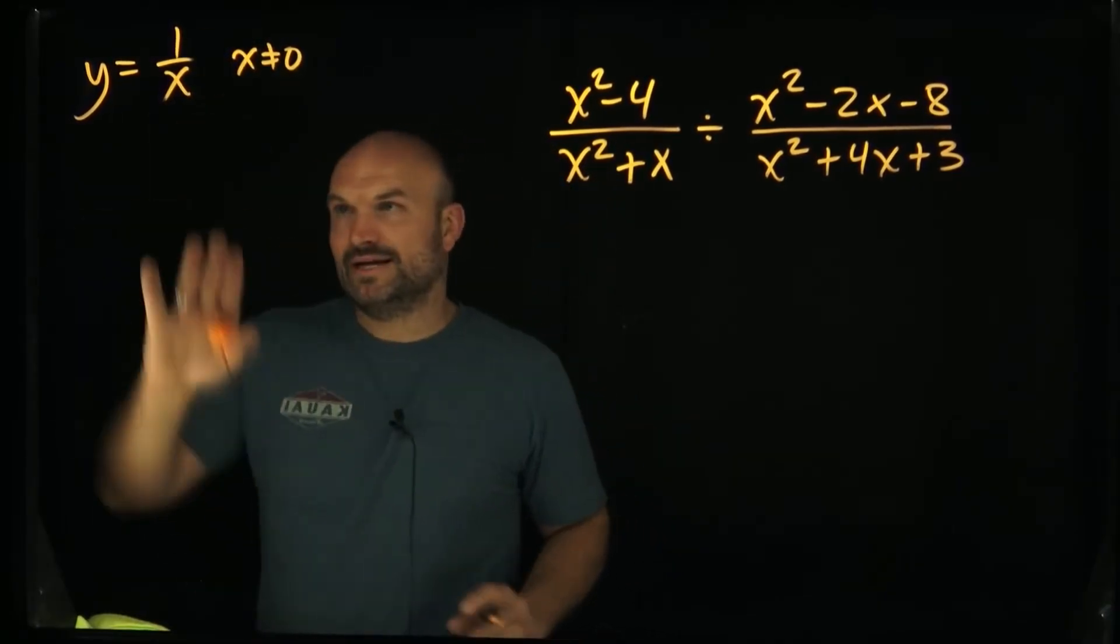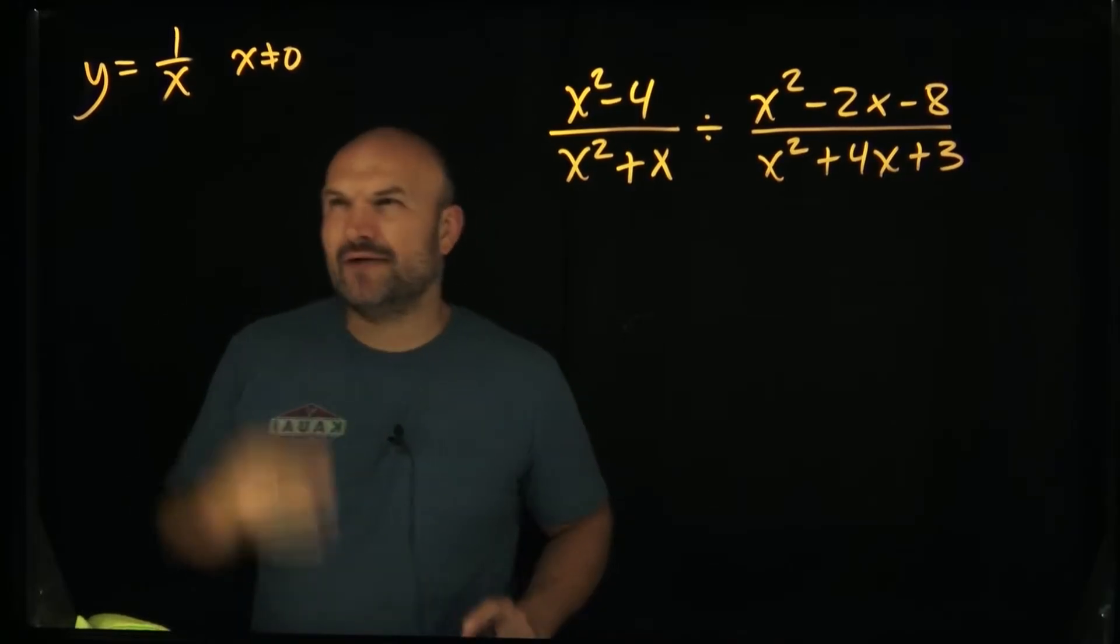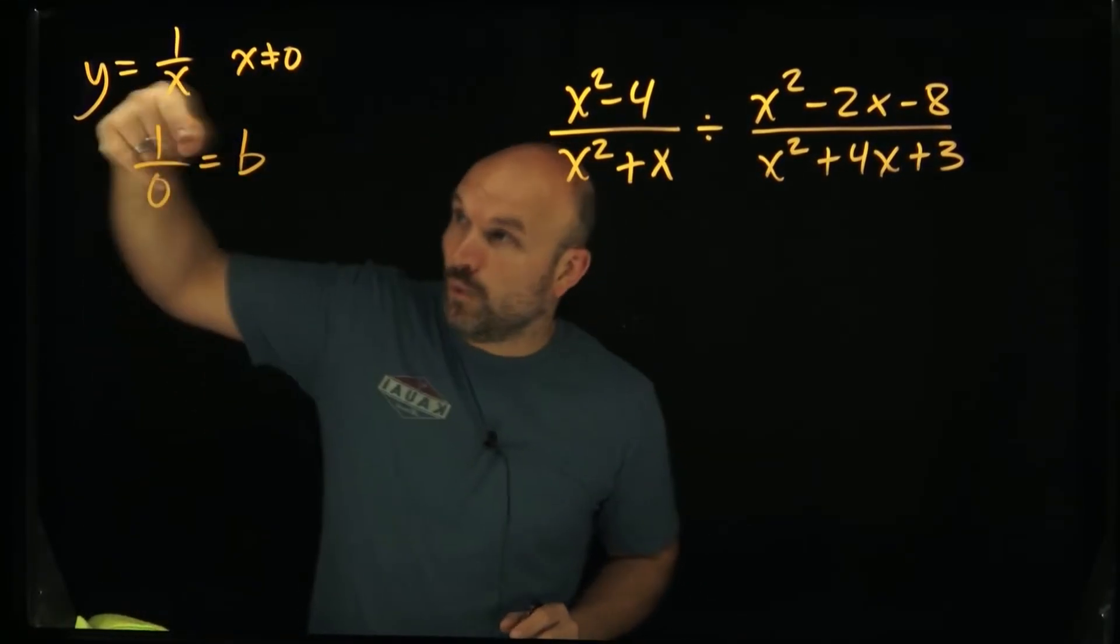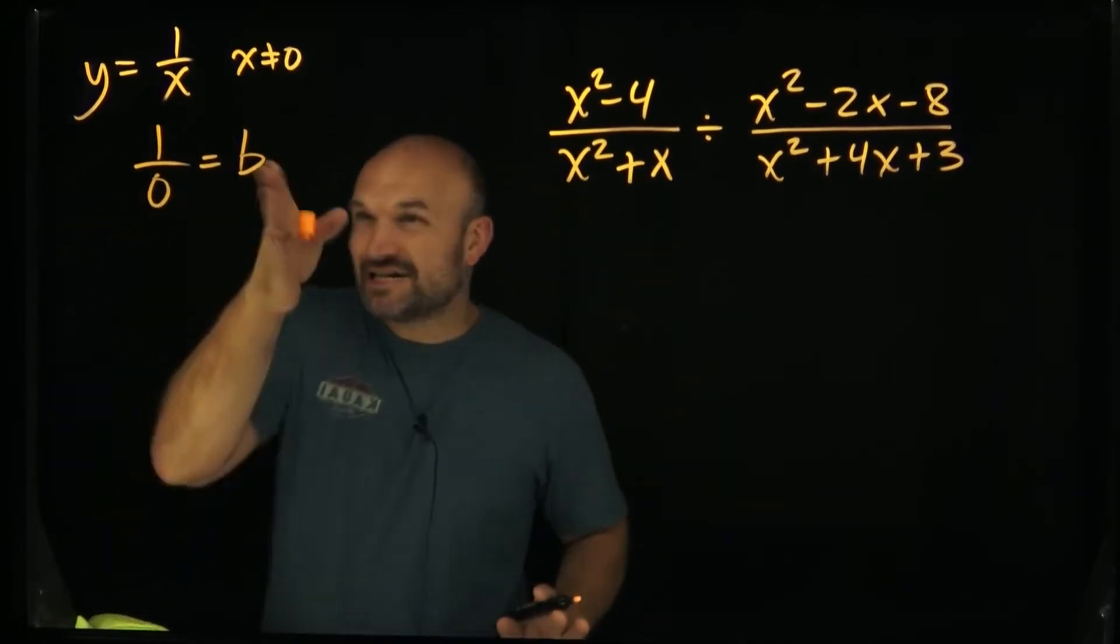Now the reason why we can't divide by zero, just real quick, is if you could divide by zero then you can multiply by zero to get that value. And what I mean by that, let me show you. Let's pretend you could divide by zero. One divided by zero was not some undefined value that's something you couldn't do, it actually equaled the value b.